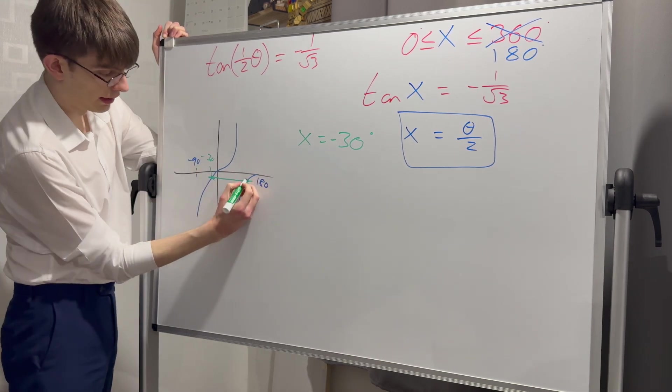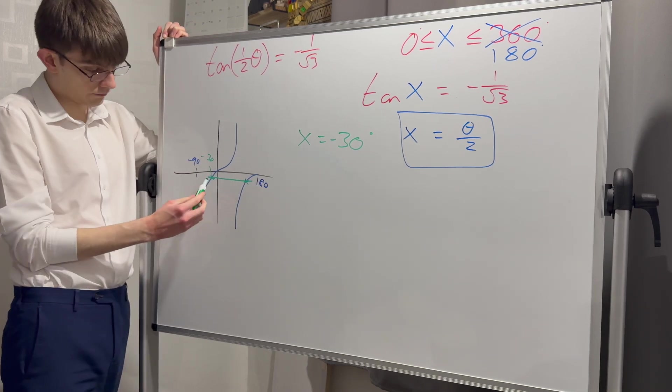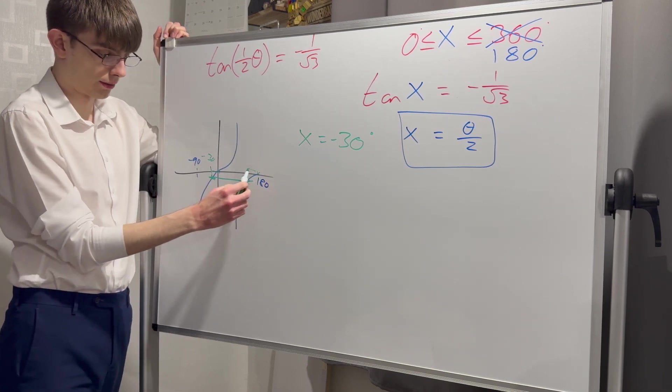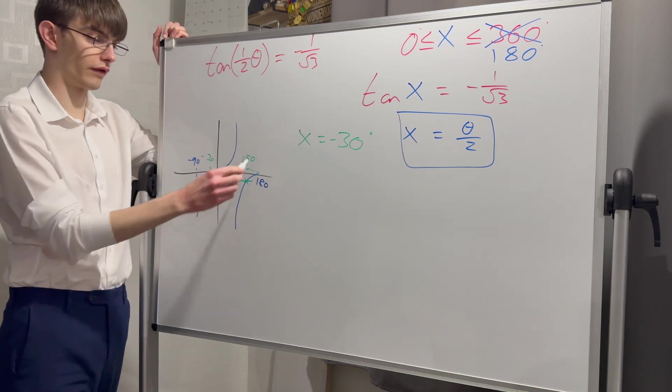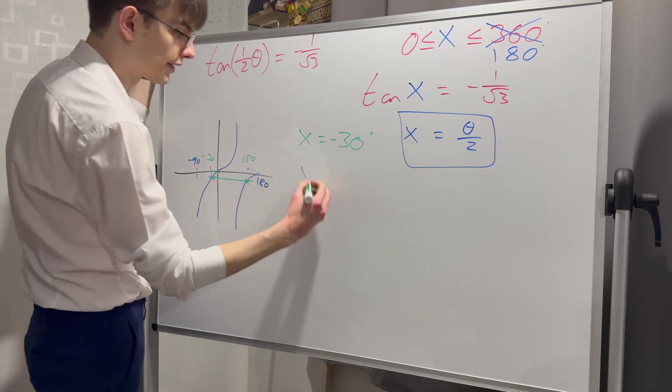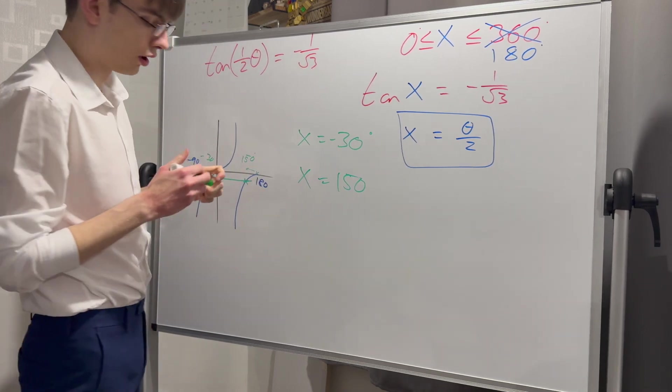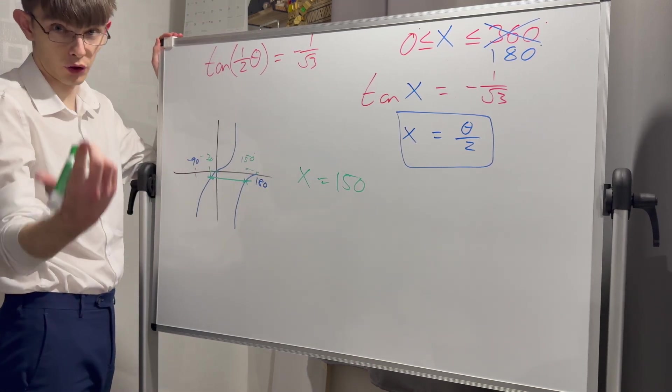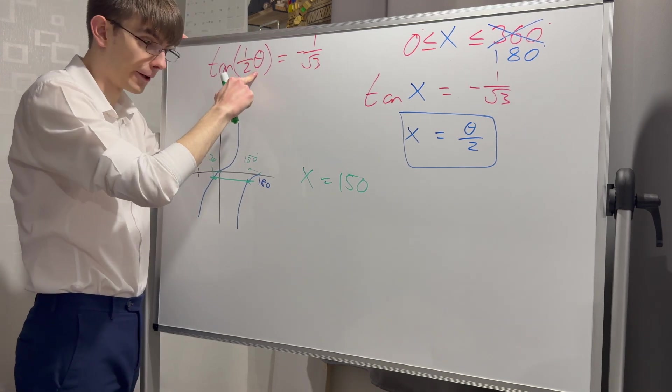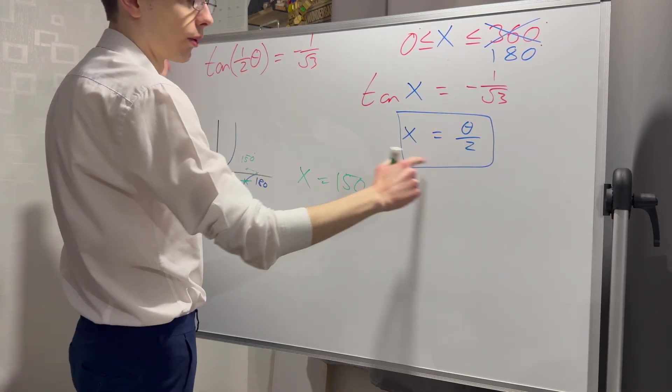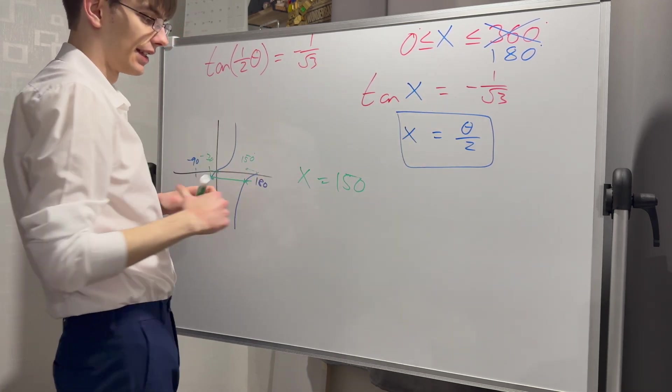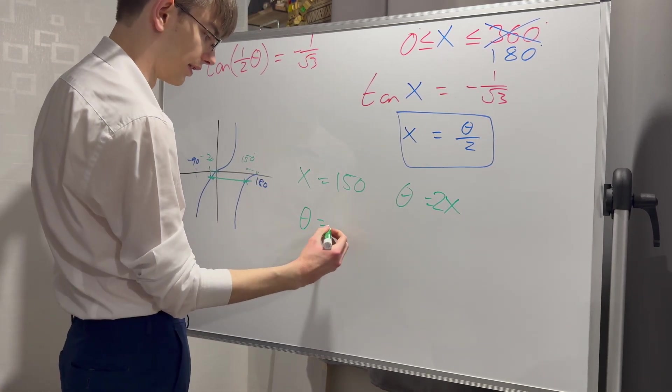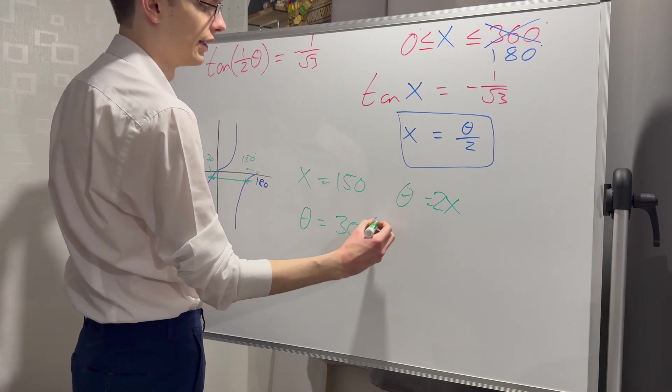The one I do care about is over here. By symmetry, it is 30 away from my graph hitting zero, which is here. So it is 150 degrees. So my x value is 150. I do not care about minus 130, it is outside of my range. Except I'm not done because I've been asked to solve for theta. X is theta over 2, so theta equals 2 times x, and theta equals 2 times 150 is 300 degrees.